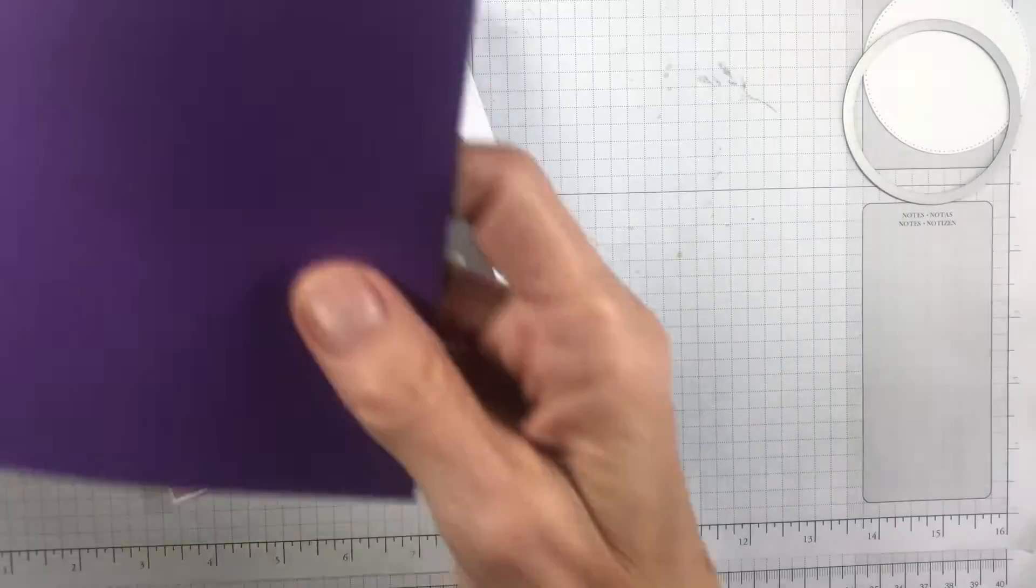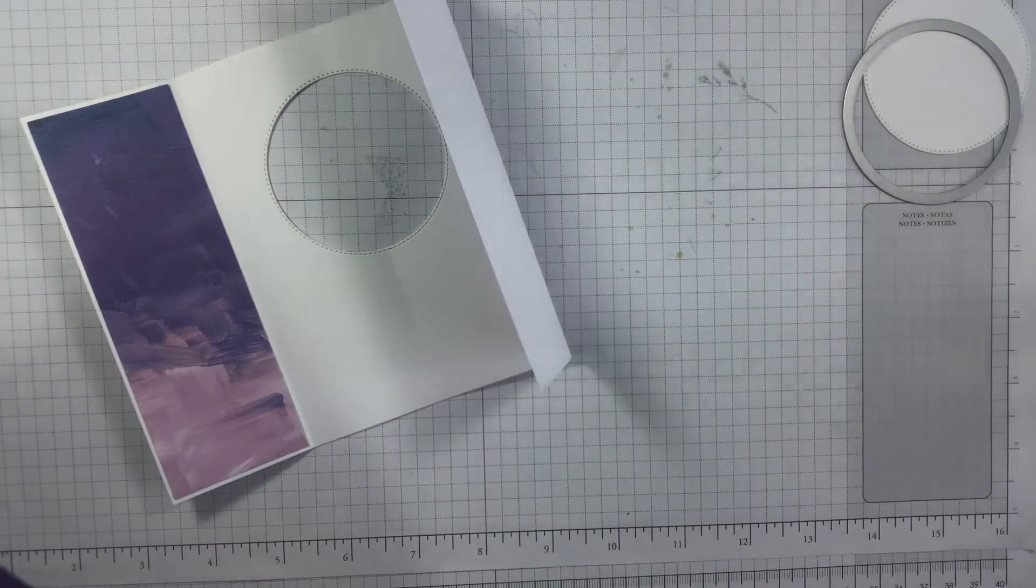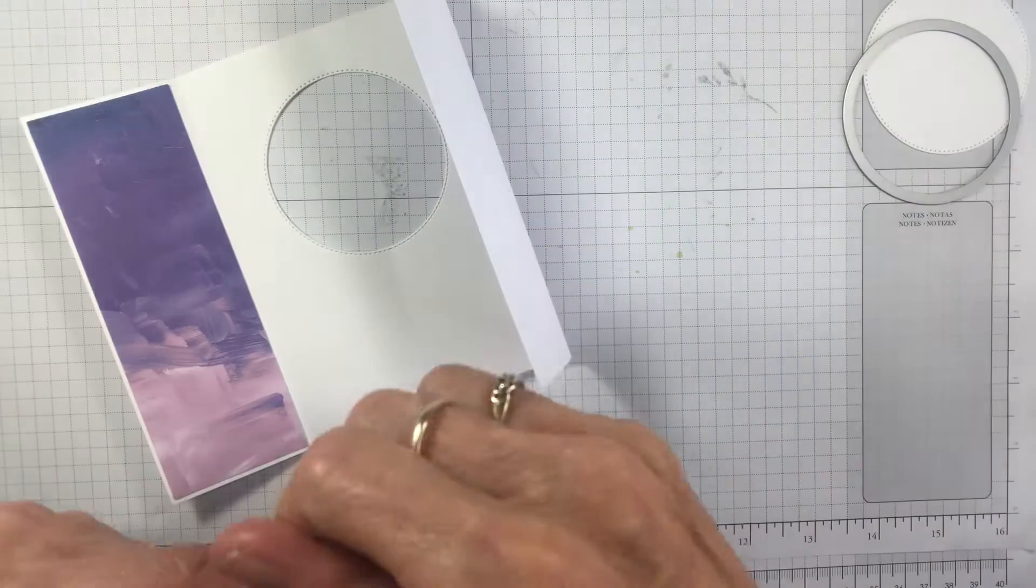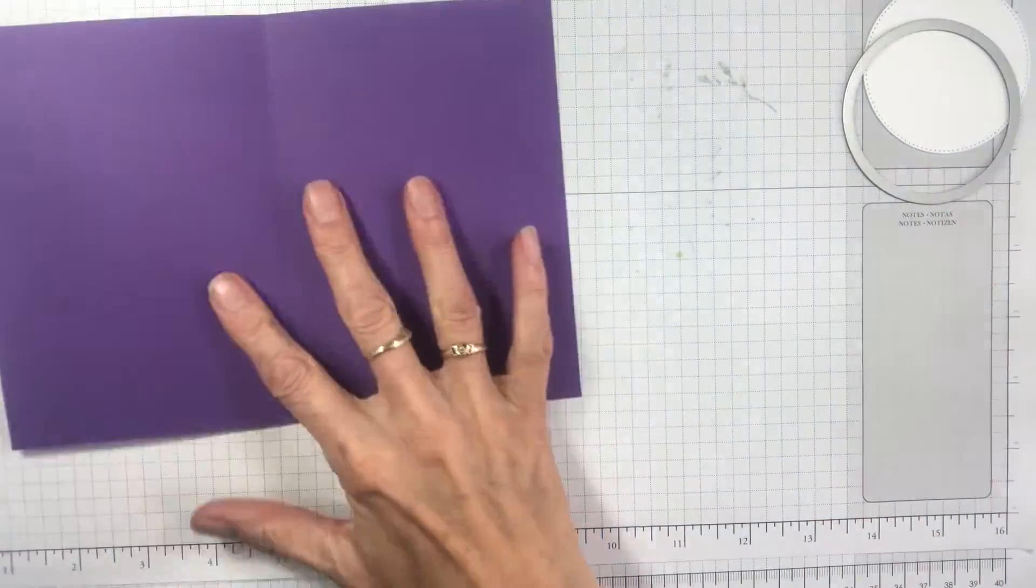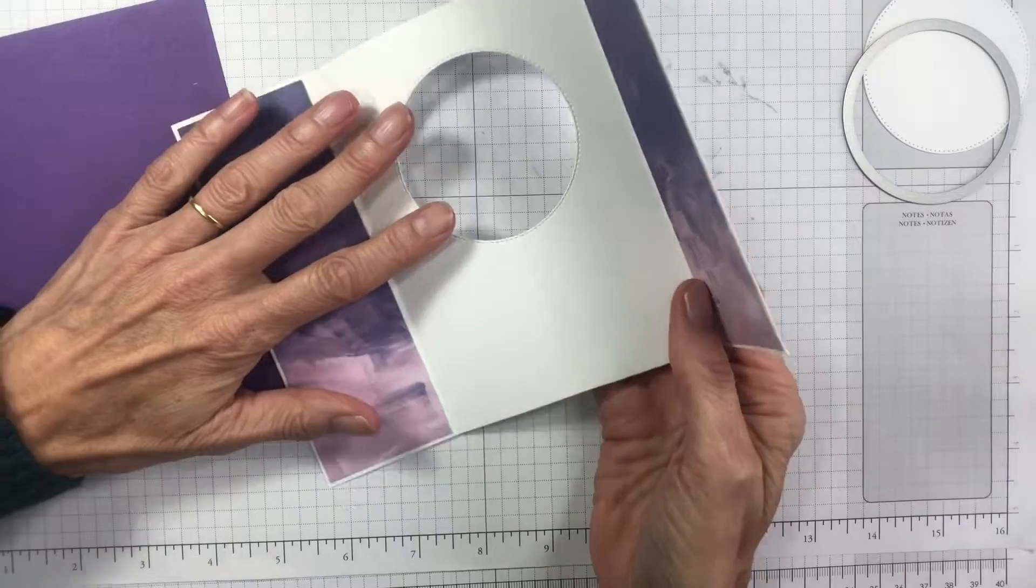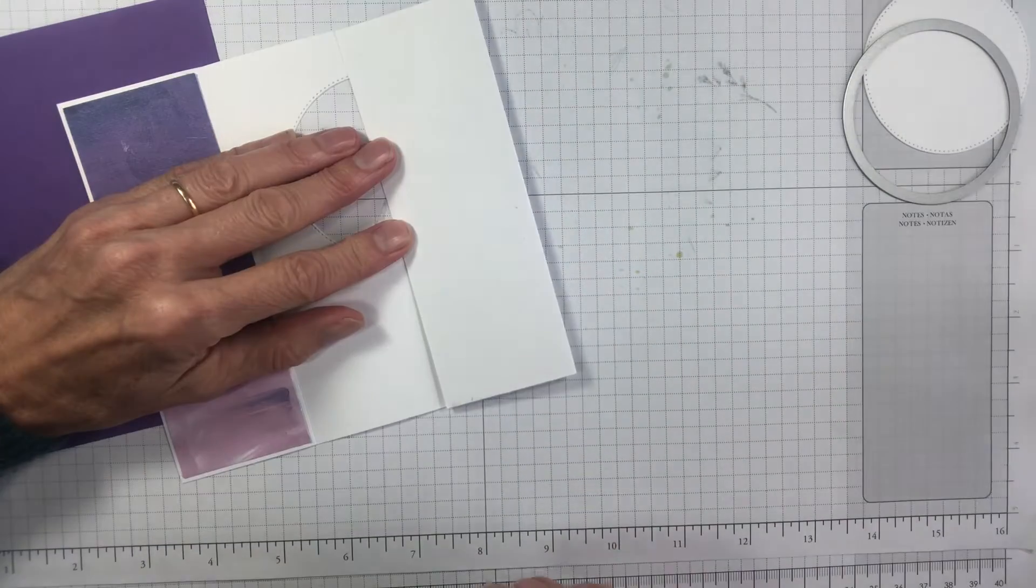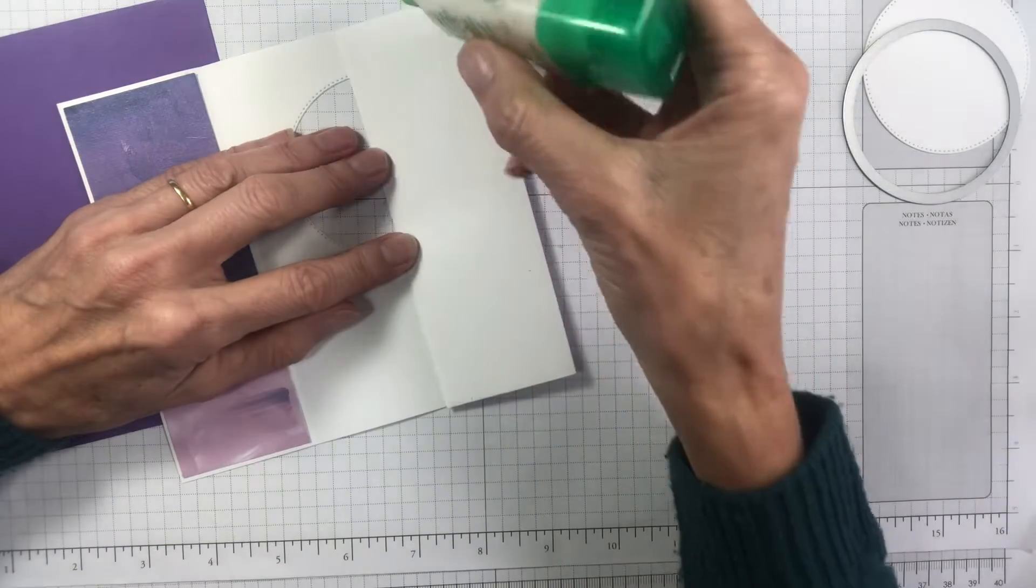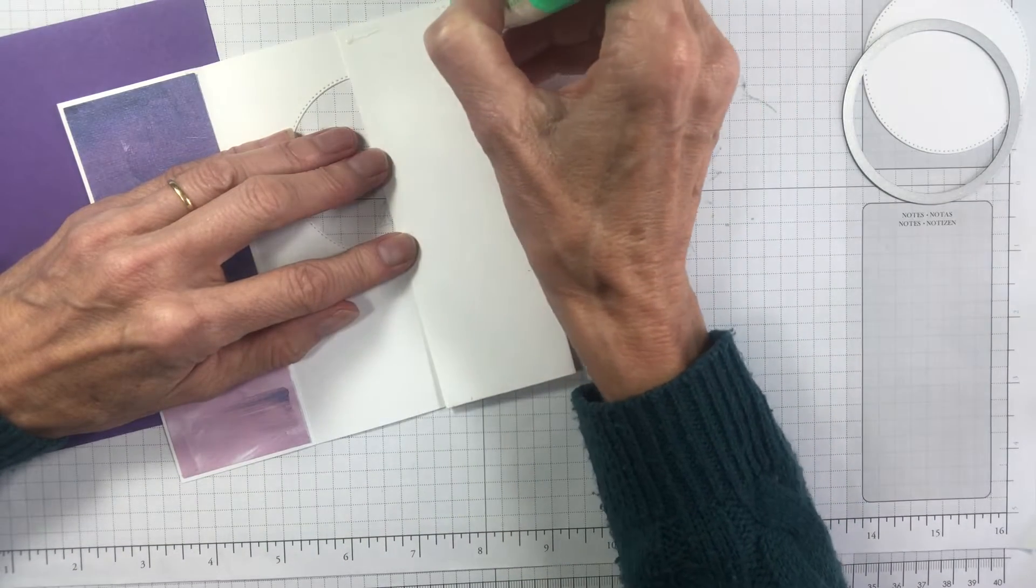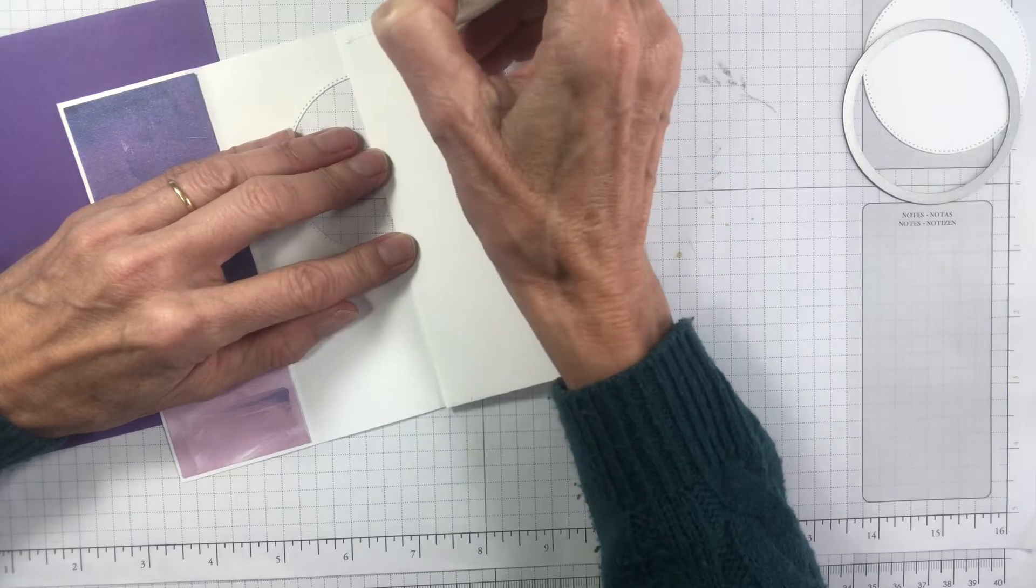So just get your bone folder and just run that along there to crisp up the folds and fold this one in too. Now the big part of it is the sticking it down inside. So grab your card base. Just give that a crisp fold. Now stick this down. Do one half at a time. Now you only want to place your adhesive just on the section, not the whole back of the card.